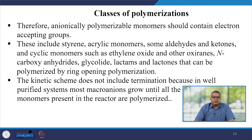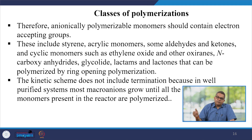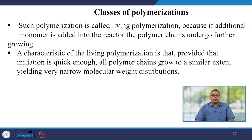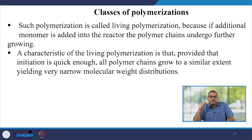The kinetic scheme does not include termination because in a well-purified system most macro-ions grow until all the monomers present in the reactor are polymerized. Such polymerizations are called living polymerization, because if additional monomer is added into the reactor the polymer chain undergoes further growing. A characteristic of living polymerization is that, provided initiation is quick enough, all polymer chains grow to a similar extent yielding a very narrow molecular weight distribution.